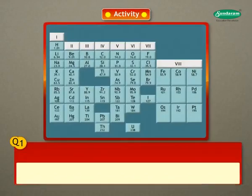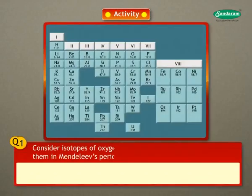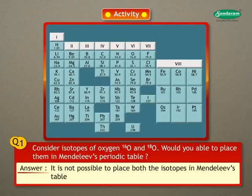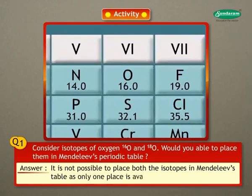Let us try to answer a few questions in this activity. Question 1: Consider isotopes of oxygen, 16O and 18O. Would you be able to place them in Mendeleev's periodic table? Answer: We cannot place them in Mendeleev's table as there is only one place for oxygen in the table.